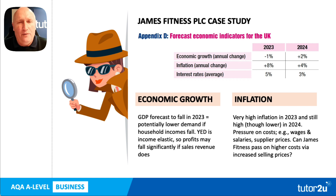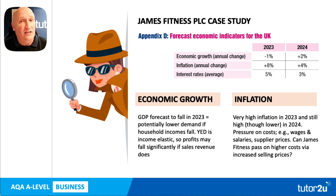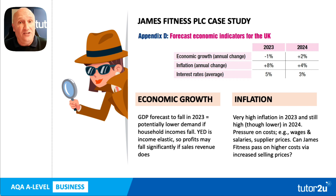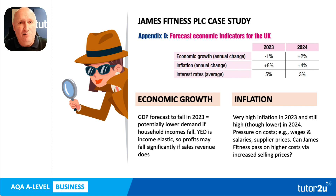So what do we glean from that? We know we need to develop two impacts on profits. For economic growth, the data is suggesting there's going to be a downturn — a reduction in the value of economic activity in 2023. A consequence in our market — health and fitness clubs — is potentially an impact on demand for gym memberships, possibly as a consequence of households having lower income. That would be my first point to develop. For inflation, high inflation is going to create pressures for extra costs for the business, for example from staff and from suppliers. That's the point I'll develop next.